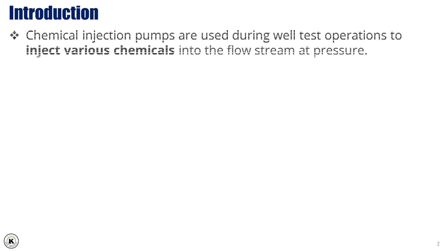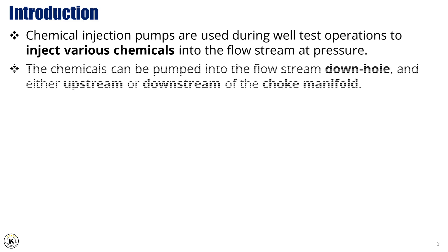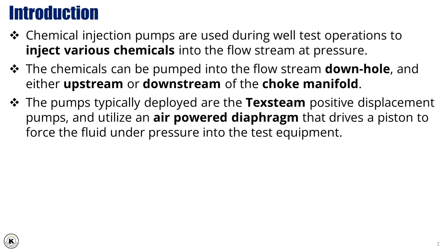Chemical injection pumps are used during well test operations to inject various chemicals into the flow stream at pressure. The chemicals can be pumped into the flow stream downhole and either upstream or downstream of the choke manifold. The pumps typically deployed are the TechSteam positive displacement pumps, utilizing an air-powered diaphragm that drives a piston to force the fluid under pressure into the test equipment.